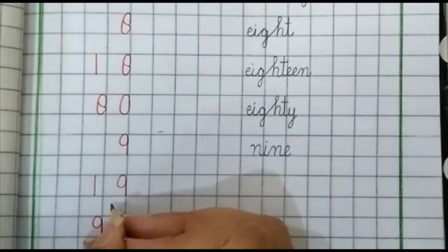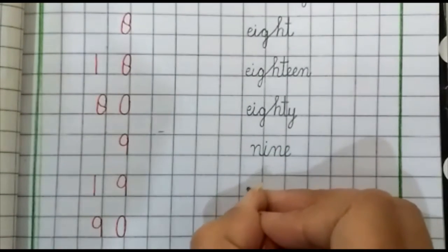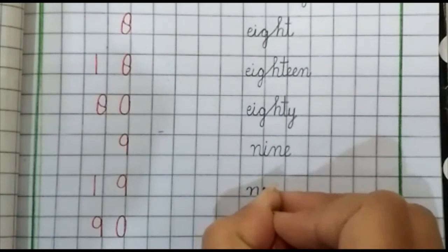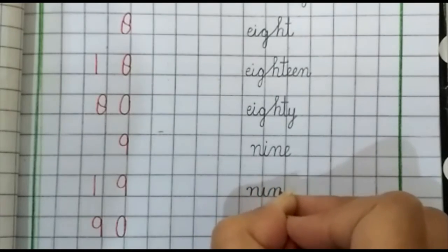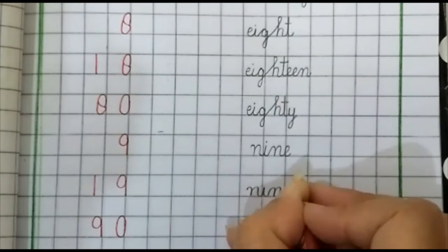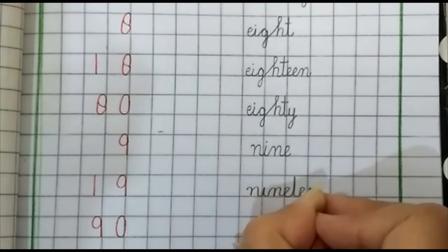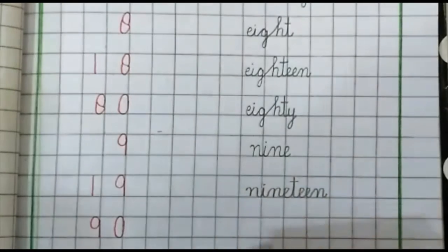Next number is 19. N, I, N, E, T, double E, N. Nineteen, nineteen.